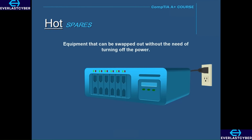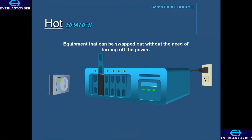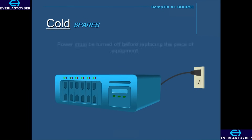A hot spare is defined as equipment that can be swapped out without turning off power. For instance, if you had a server with multiple hot-swappable hard drives and a hard drive were to fail, you wouldn't need to shut down the server — you would just remove the hard drive and replace it with a new one while the power is still on. A cold spare is similar to a hot spare, but with a cold spare, you must first turn off the power to replace the piece of equipment.